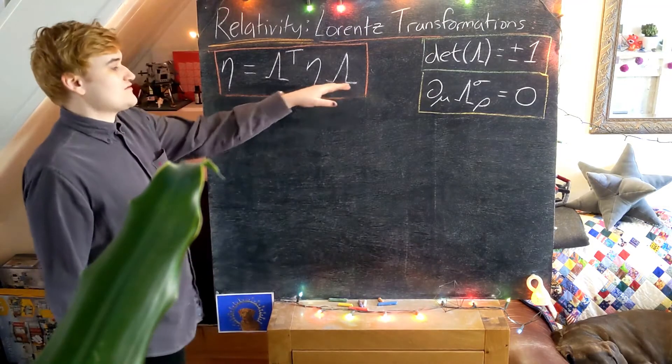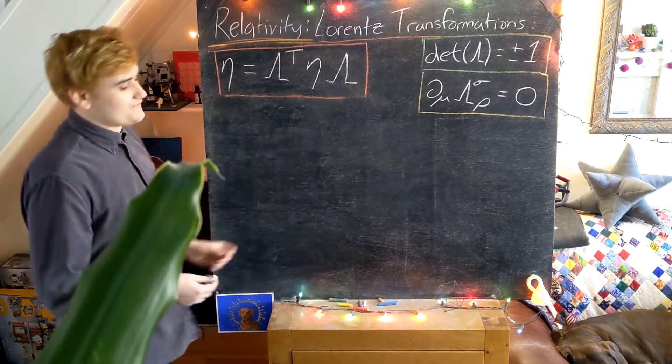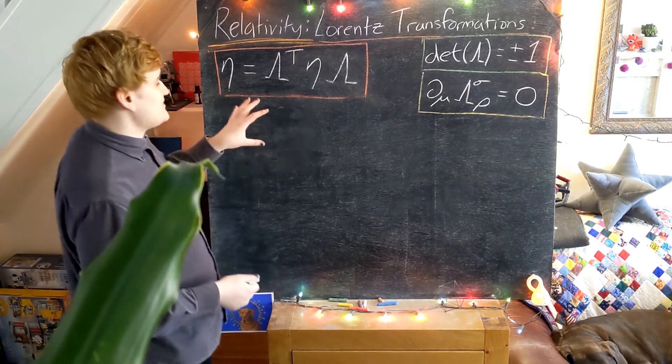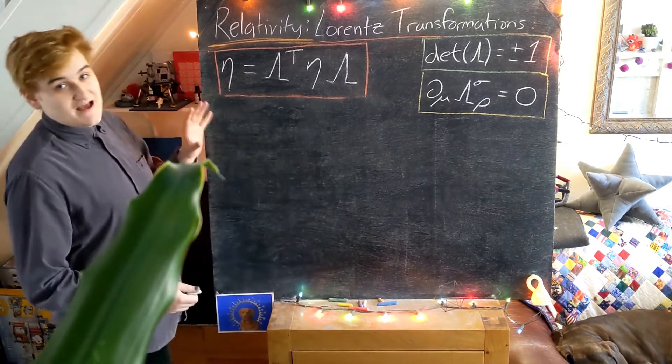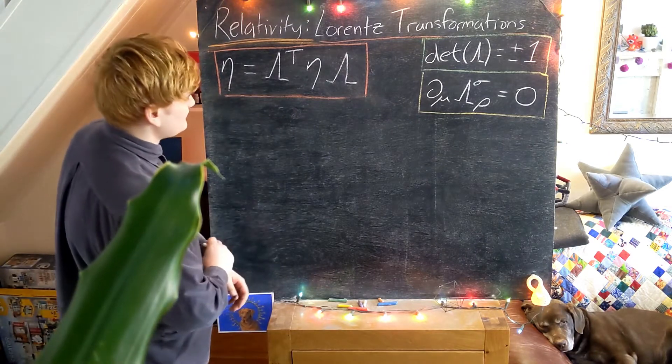So previously we only considered a transformation which just affects the space coordinates. Now let's start looking at something which is going to affect both space and time coordinates. So I'll just postulate the matrix and then we can go through it.